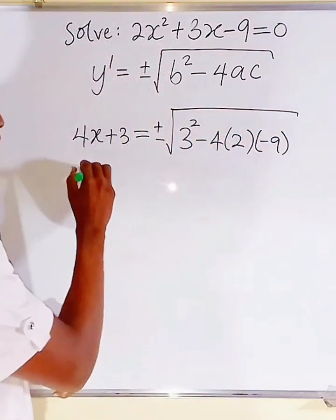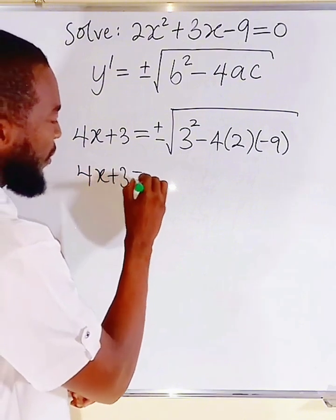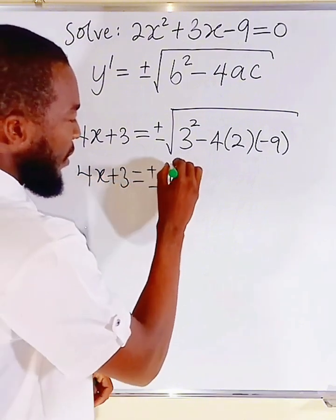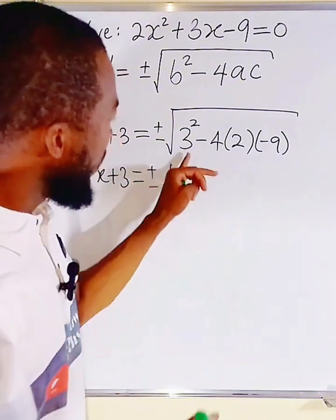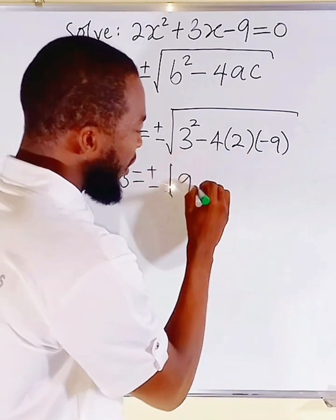Let's simplify this first. This is 4x plus 3, equal to plus or minus the square root of. This is 9. Minus, minus, we have plus.